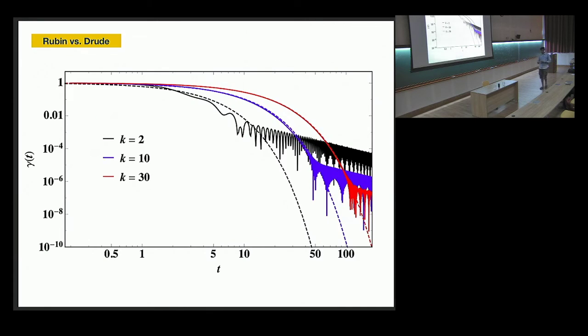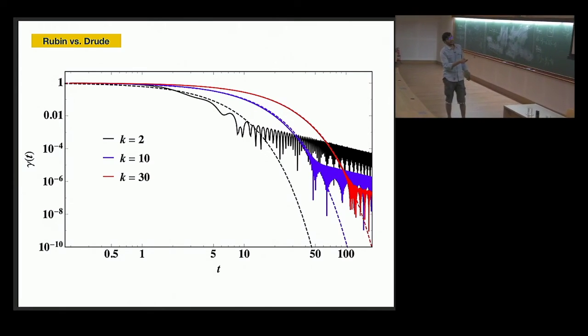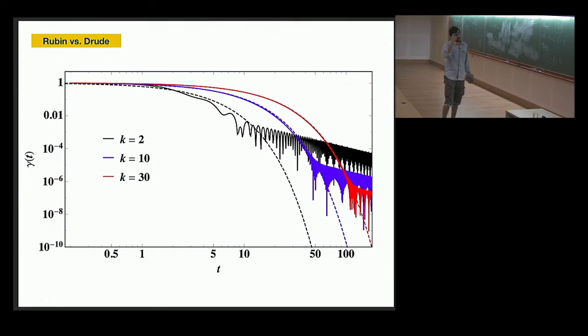And now question is the Rubin versus Drude. The thing I said that if I make that k large, k and k prime large, so can we do, I mean, can we see in the data? The answer is yes. See, if I increase the k, the Drude and Rubin, this dotted is Drude and this solid is Rubin, they are almost matching. And the match is becoming more and more better when I increase k. So this actually works, this limit works.